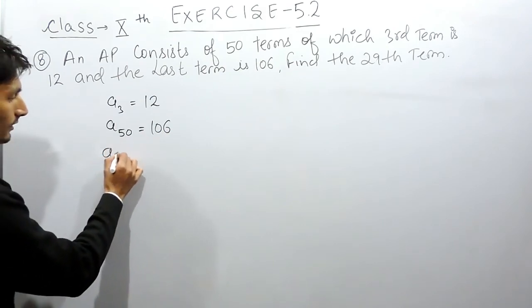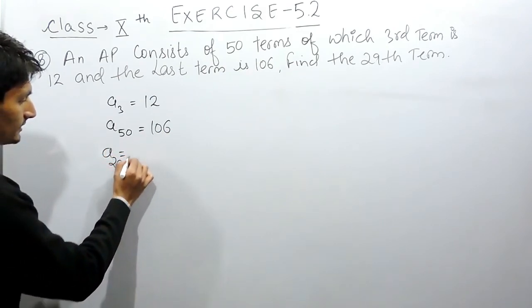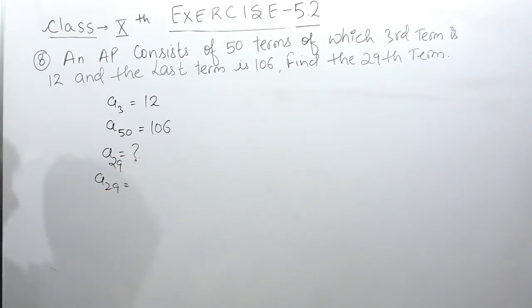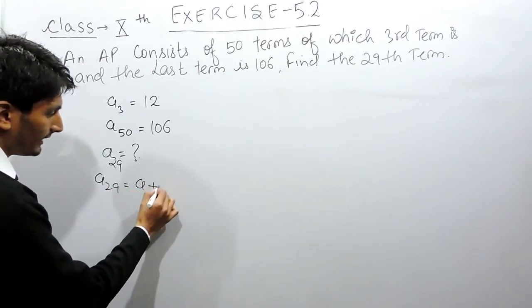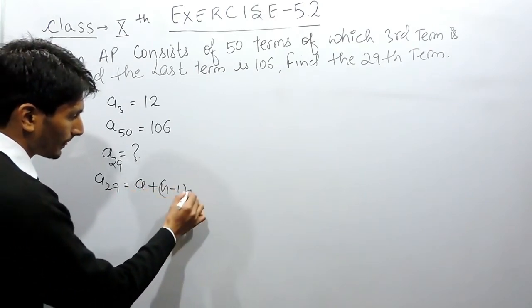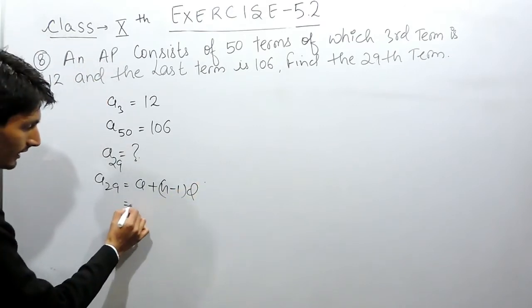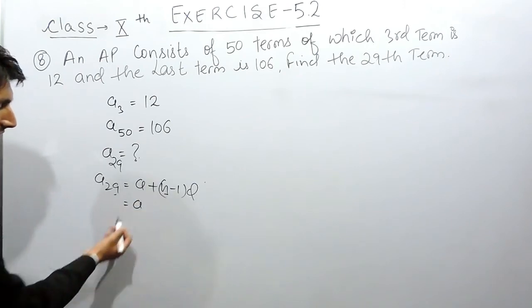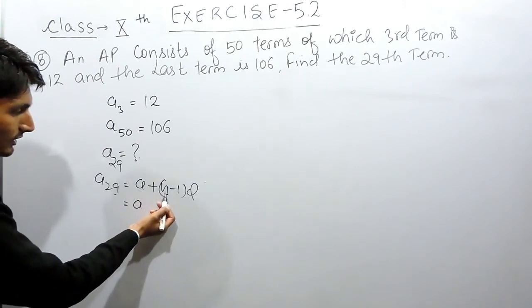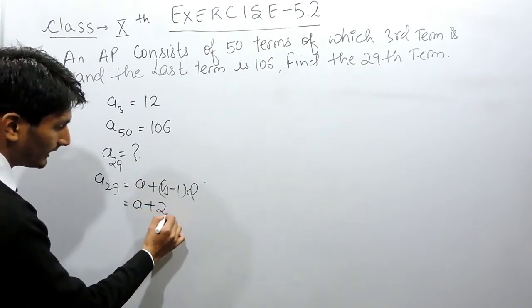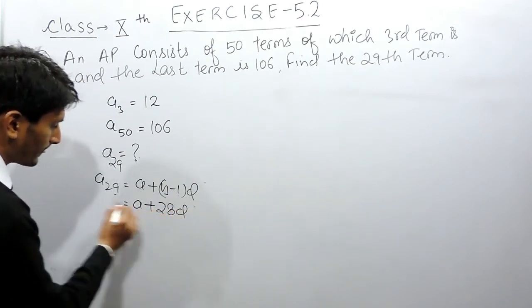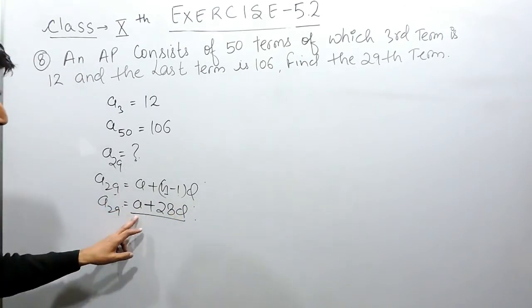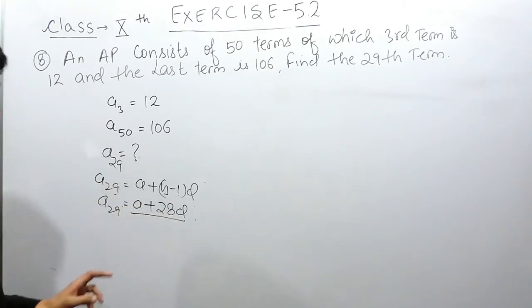You have to find out the 29th term. To find out the 29th term we have a formula: A_n = A + (n-1)D. Here the number of terms that we have to find is 29, so 29 minus 1 is 28 into D. To find out the 29th term we need the value of A, which is the first term, and D, which is our common difference.